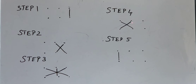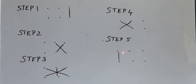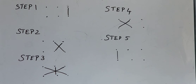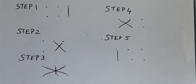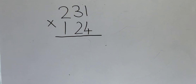Step 4: cross multiply these two numbers and add them up. Step 5: vertically multiply these two numbers. Remember these steps to multiply a three digit number.